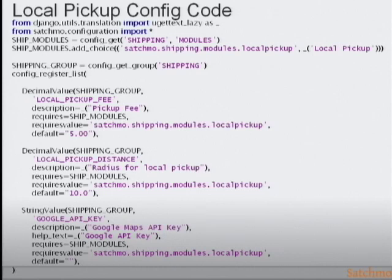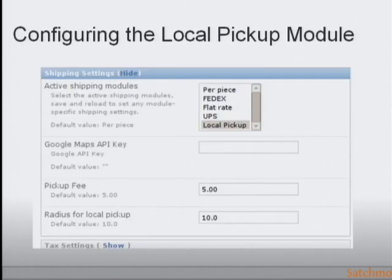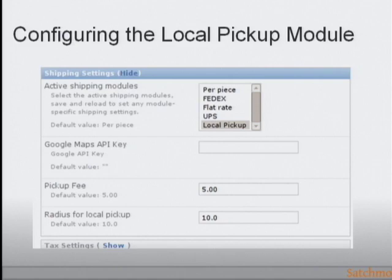Once you're done, you need to enable the local pickup module. Within the Satchmo settings file there's a custom shipping module list — you just add your module to it and Satchmo will automatically pick it up and make it available. Within the admin interface, you'll have the option to look at all available modules: FedEx, UPS, flat rate per piece, and my local pickup one. You can pick and choose which ones you want to use, and you can also enter your API key and fees.